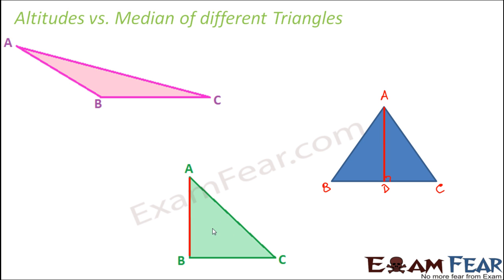Next for this right angle triangle. So here in this case we have to draw a line from A perpendicular to the opposite side that is BC. So the moment we draw a perpendicular line we see that it actually coincides with the line AB.